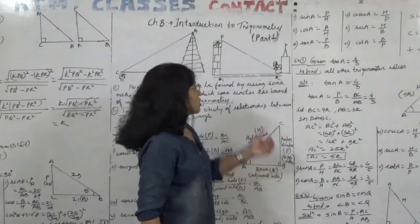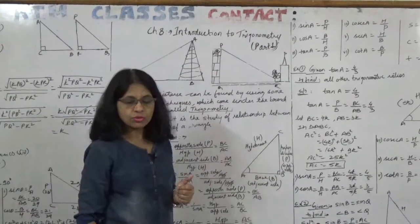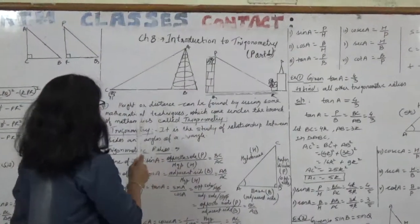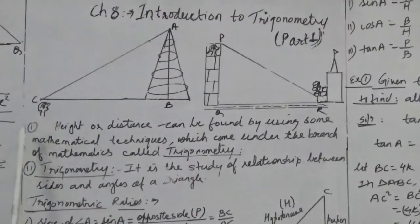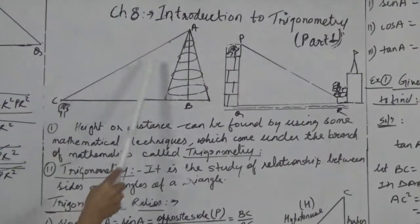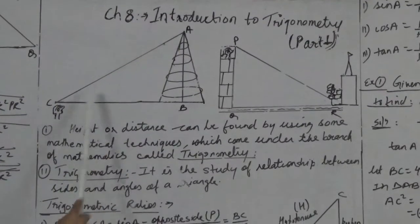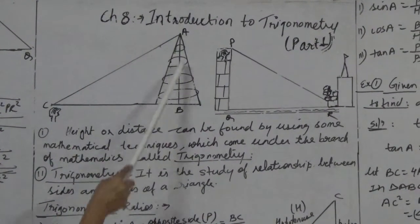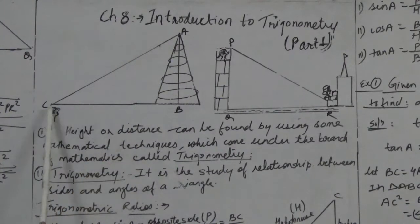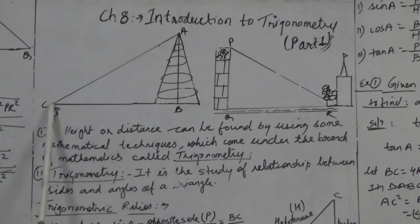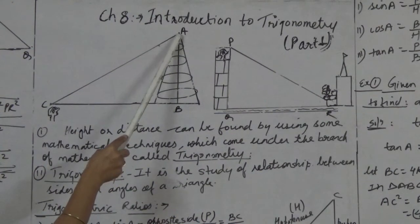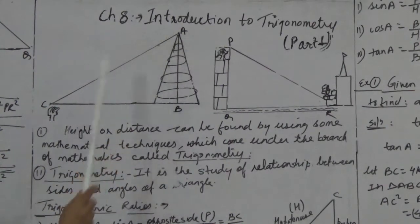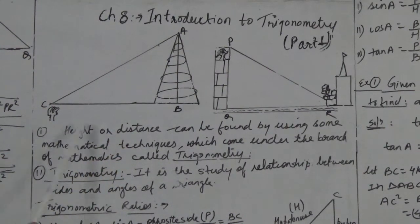Here I have drawn two figures for you to understand the meaning of trigonometry. In the first figure, the boy is looking at the top of the minar. The boy is imagined to form a right angle triangle ABC. Can a boy find the height of the minar without actually measuring the height?